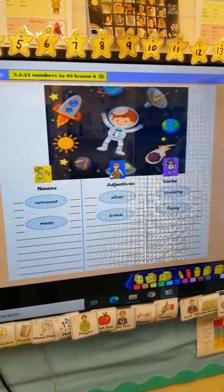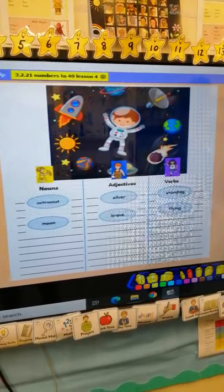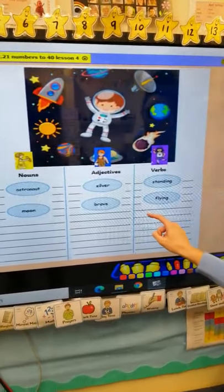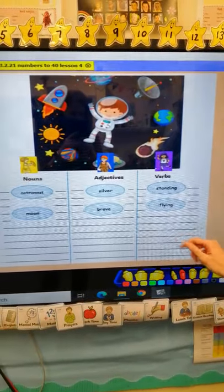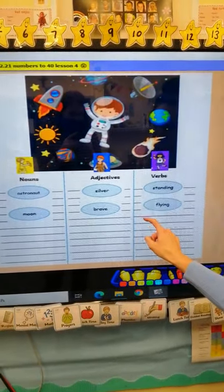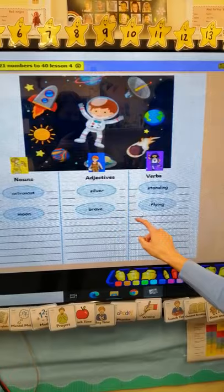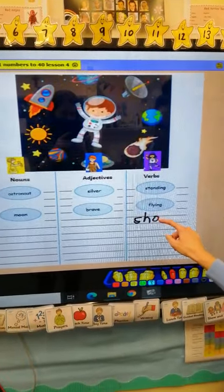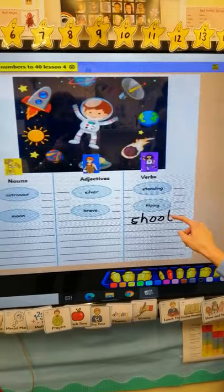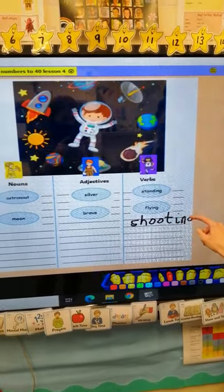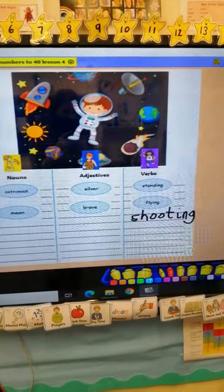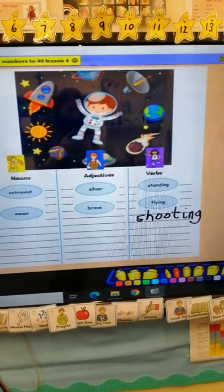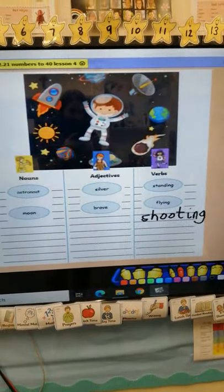Oh, well done. We could have a verb. We could have the word shooting, couldn't we? Who said shooting? I think I heard you. The space rocket was shooting through the sky. Let's sound that out together. Sh. OO. T. And then we've got that I-N-G sound. Brilliant. I've thought of my own verb to add to my list. And that's exactly what I want you guys to do.